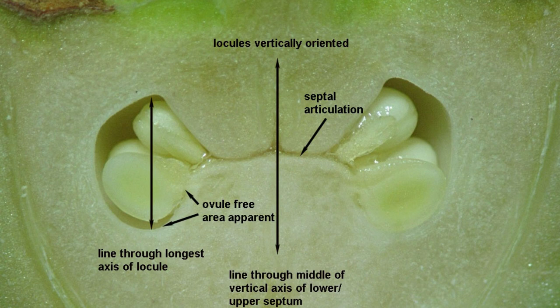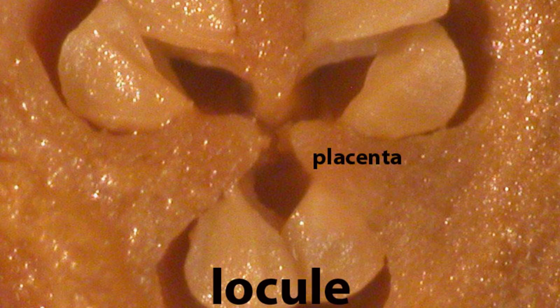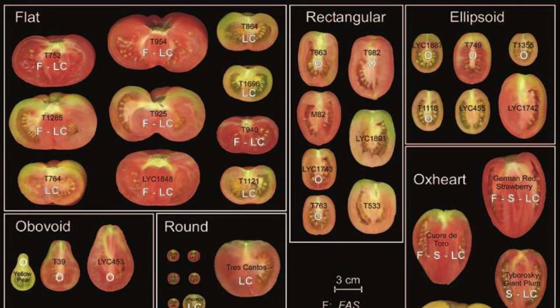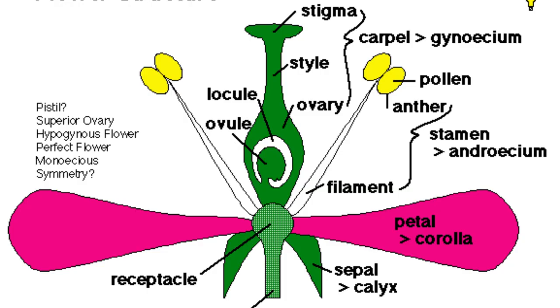A locule refers to a small compartment or chamber found in various plant structures, such as anthers, ovaries, and fruit. Locules are crucial in the reproduction and dispersal of plant species, as well as the storage of essential nutrients and energy sources.